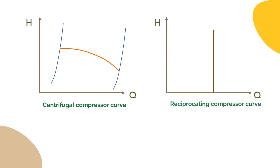As we see, Q which is the volumetric flow rate of the gas depends on H, the head which the compressor gives. Let's assume that we need to operate the centrifugal compressor at this point, so we have a specific flow rate at a specific head.